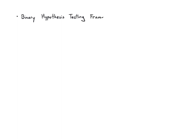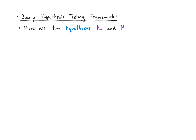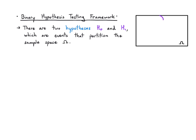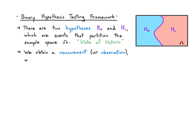Here's the overall framework for binary hypothesis testing. Binary refers to the fact that there are going to be two hypotheses, which we'll call h0 and h1. These are events that partition some underlying sample space omega. We get a measurement or observation, and we're going to think about that as a random variable y.